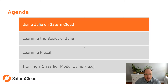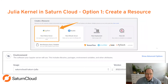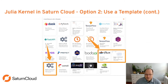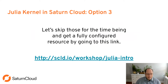We're going to talk about how you would go about starting a Julia kernel on Saturn Cloud. The first way is to create a resource — click on new Python server, which is a JupyterLab notebook. You'll then select the image 'Saturn Julia' and be able to start the kernel. Another method is to start a new resource from a template, where you'll find several Julia-related templates. For this webinar, we're going to skip those steps and get right to a fully configured resource by going to a specific link.